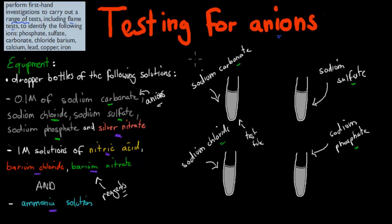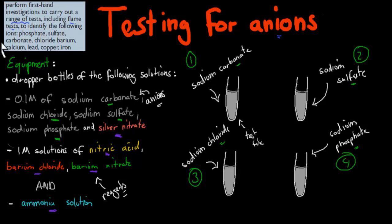Remember, there's a sequence. Usually we start with carbonate testing first, then sulfate, then chloride, then phosphate. In this actual experiment, you don't have to keep to the sequence because we know there's only one type of anion in that solution. If there were more than one different type, or you don't know exactly what type of anions are inside, you would have to follow the sequence because you don't want to make your results unreliable.